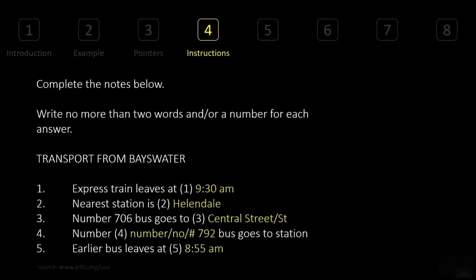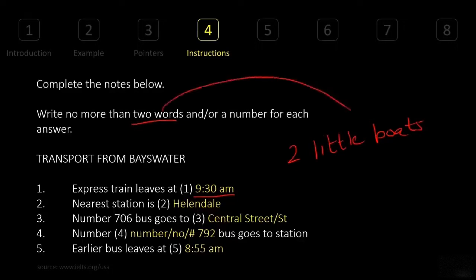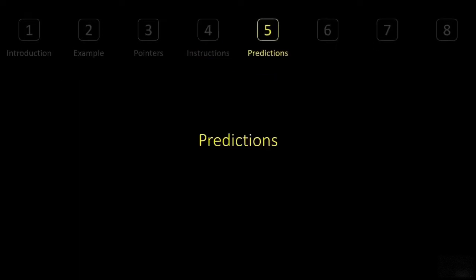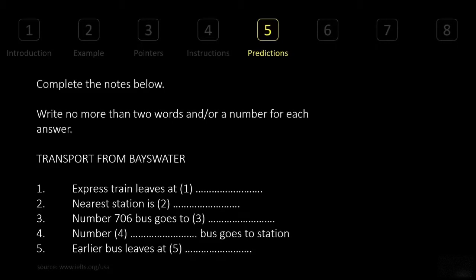For example, the answer '9:30 AM' — 9:30 is a number and AM is a word. Or consider 'two little boats': that's two words plus a number, which is still fine according to the instruction. You might think that's three items, but it's one word, a second word, and a number — still fine. If there is only one word to write, you cannot write two words. Remember that.